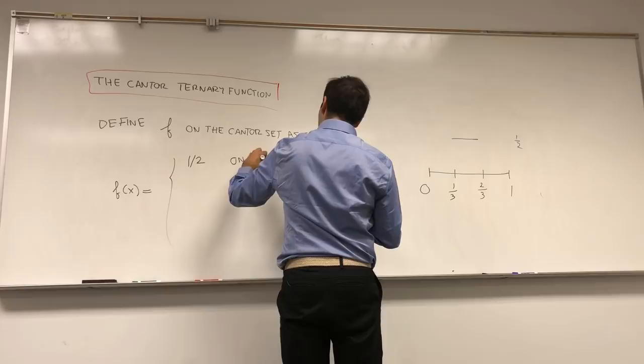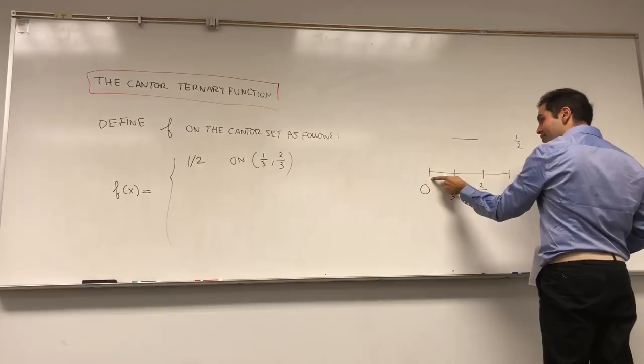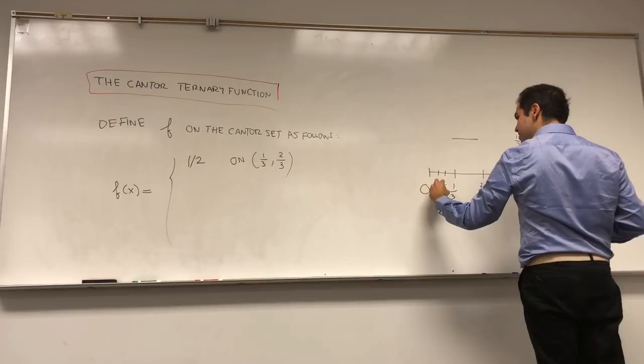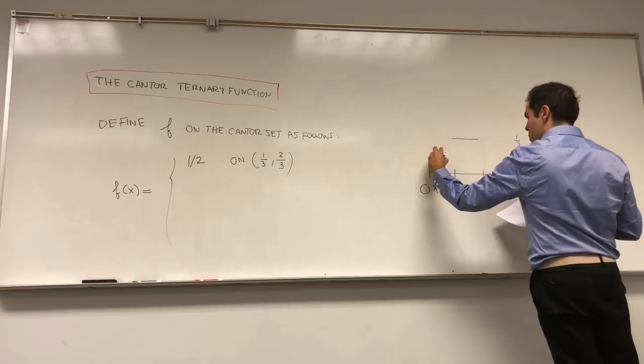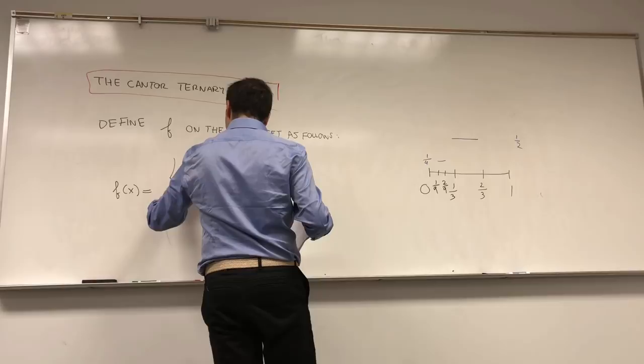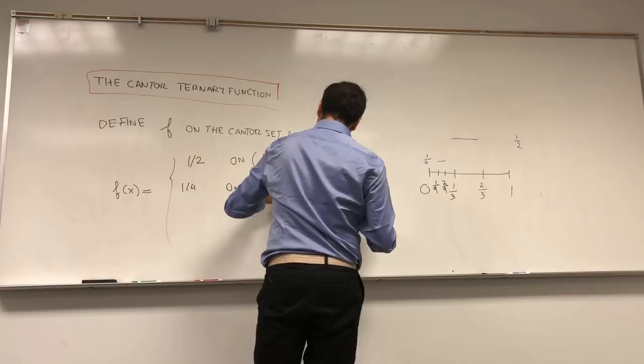Then continue. On the interval [0, 1/3], divide it up into three pieces, giving [0, 1/9], [1/9, 2/9], [2/9, 1/3]. On the middle piece, define f to be 1/4. So 1/4 on [1/9, 2/9].